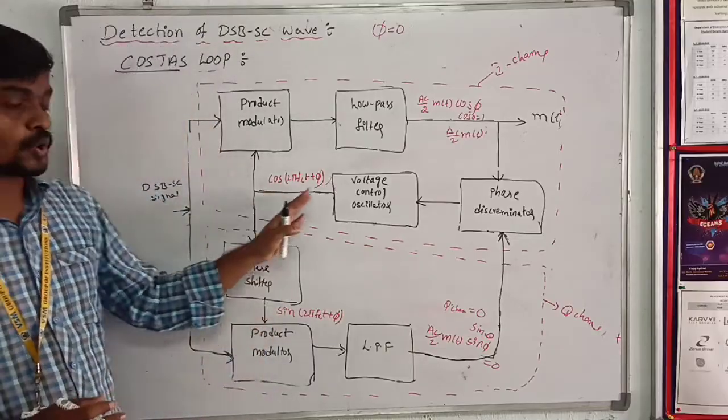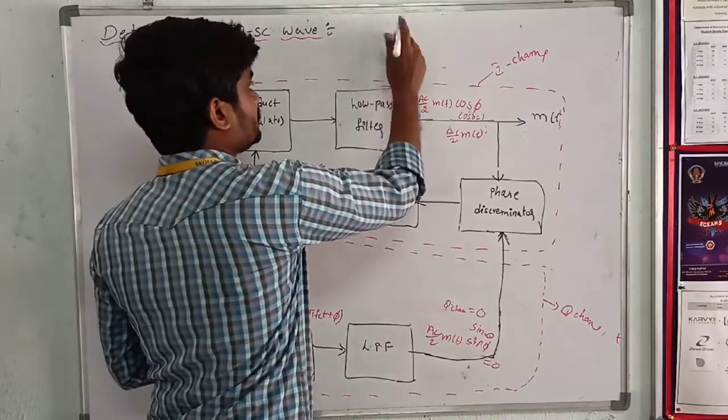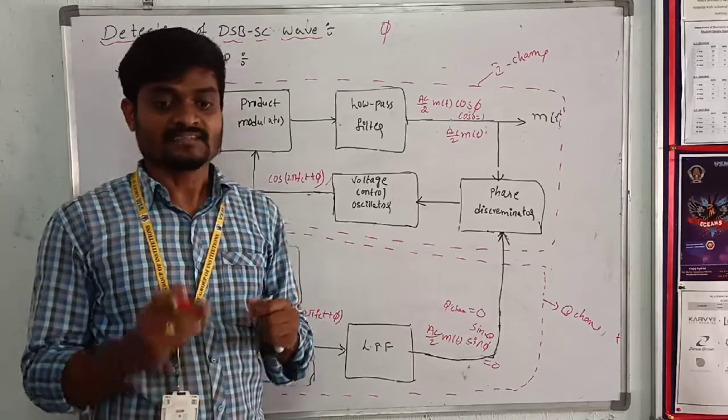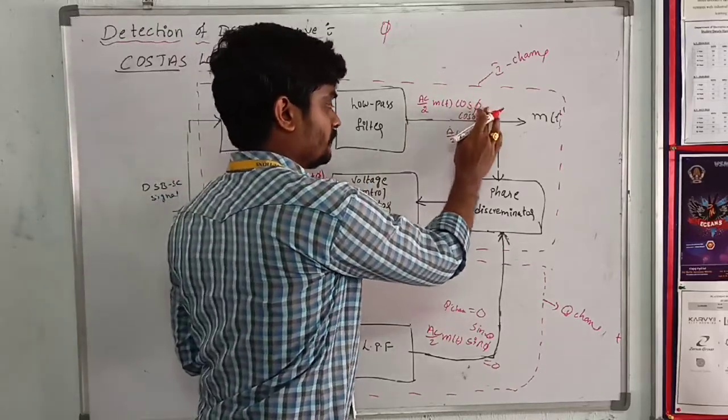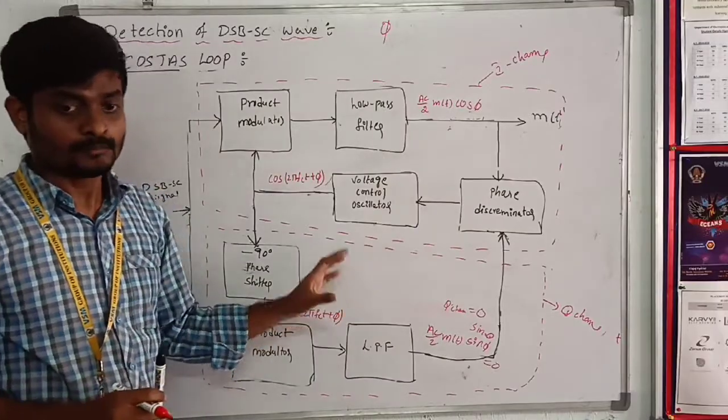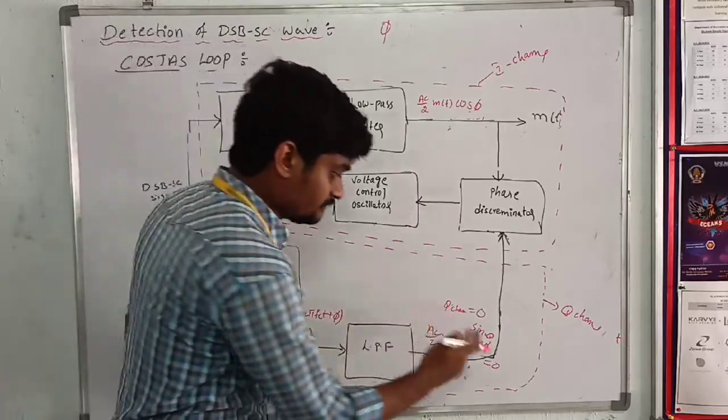Next, when the local oscillator phase changes by a small angle φ radians, the I channel output becomes Ac/2 m(t) cos(φ). But the Q channel produces an output proportional to sin(φ).